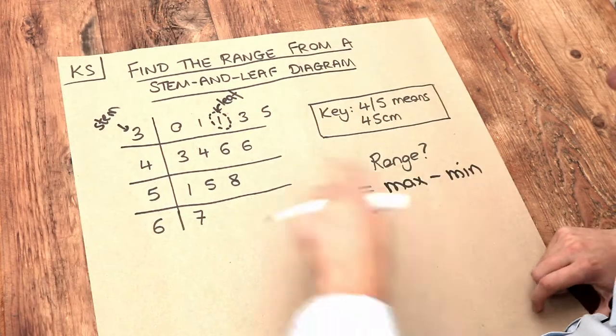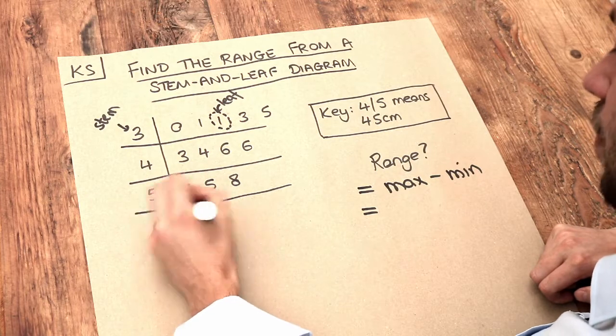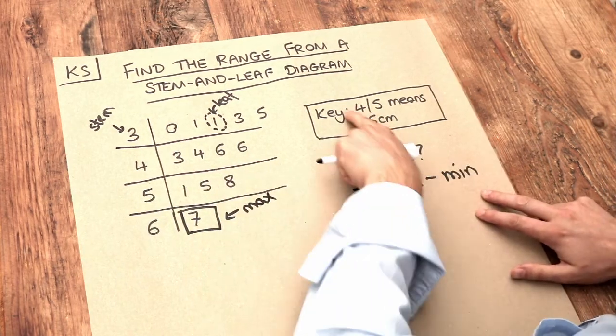Now what is the maximum value? Well, we go across these values, the last one is this seven here, that's the maximum value, and let's use the key.